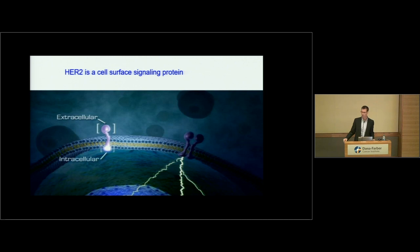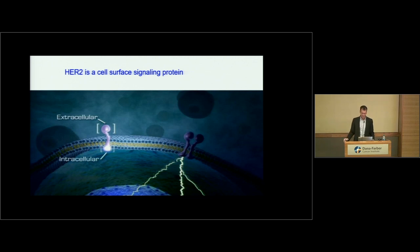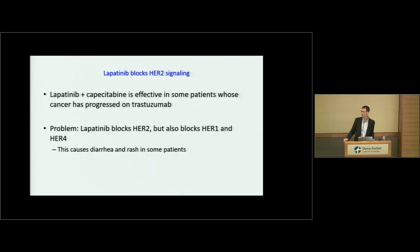HER2 function inhibitors work inside the cell to block the signal. HER2 sits on the surface to send a signal into the nucleus to grow aggressively. Drugs like trastuzumab bind outside, but there are also drugs that go inside the cell to block the signal. The first of these is lapatinib, or Tykerb — an oral HER2 inhibitor. Lapatinib plus capecitabine, or Xeloda, is effective in patients who've already had trastuzumab and is now an FDA-approved regimen. The downside is that lapatinib doesn't just block HER2 — it also blocks related proteins, causing side effects like diarrhea and rash.